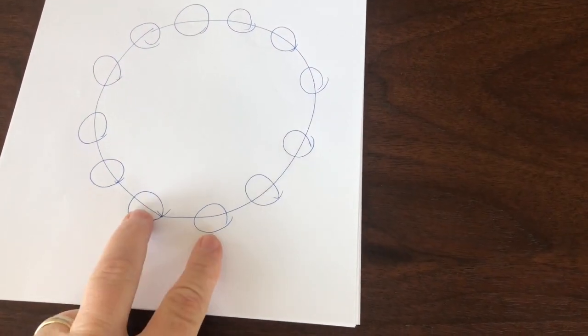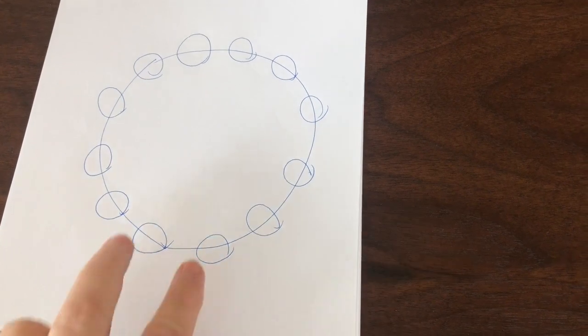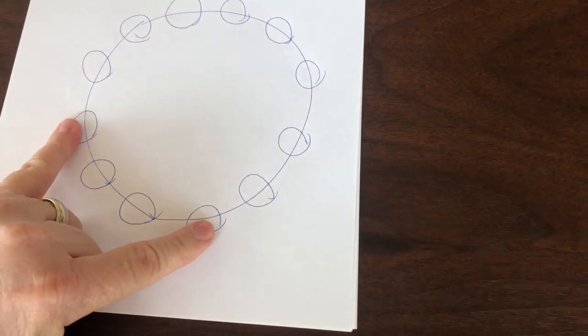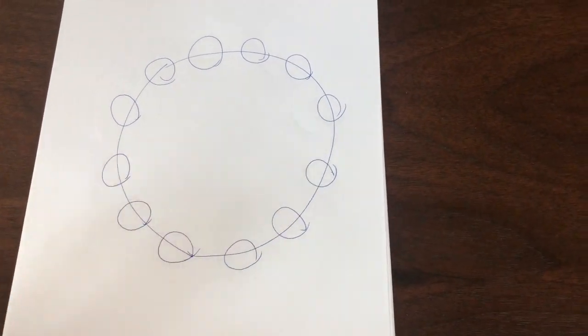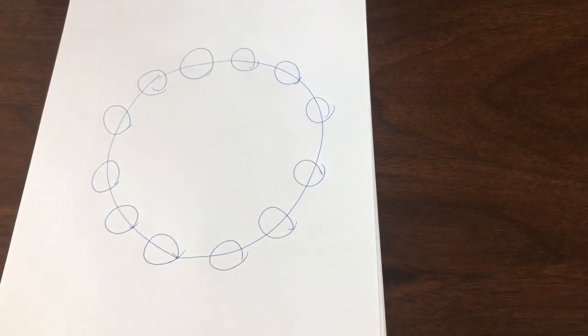And the only rule is when you're crossing off two circles at any given time, they have to be adjacent like these two. But I can't do like this one and that one. So they always have to be adjacent. So do you want to go first? The winner is whoever crosses off the last circle wherever that circle is.